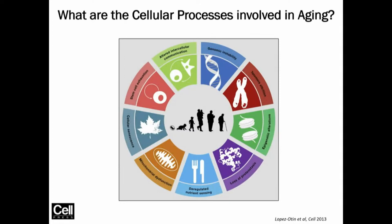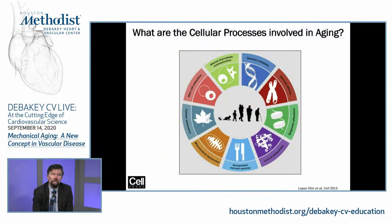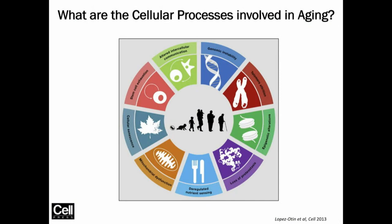What causes aging? This slide is from a beautiful review by Lopez-Oteen in Cell in 2013, and it takes us through the different components of aging — the different processes occurring at a cellular level. At six o'clock on this diagram, you have deregulated nutrient sensing that can lead to metabolic syndrome. You have mitochondrial impairments — the mitochondria doesn't perform properly in generating energy and starts generating more reactive oxygen species.